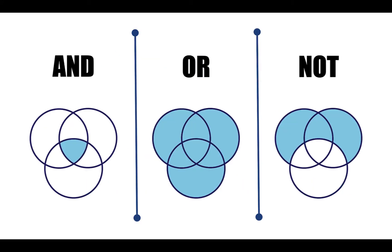One way we can combine our keywords more effectively is by using Boolean operators. Boolean operators are specific terms that you can add to your search so that the catalog or database understands the relationship between your ideas. There are three main Boolean operators: AND, OR, and AND NOT. Each one plays a unique role in your searching. Let's take a look at each one.